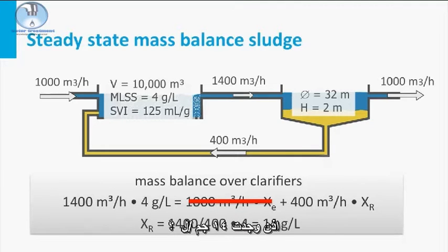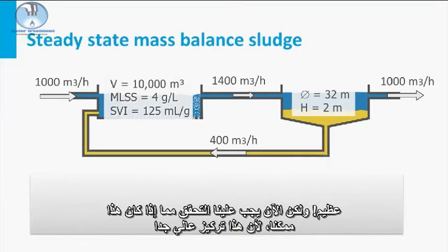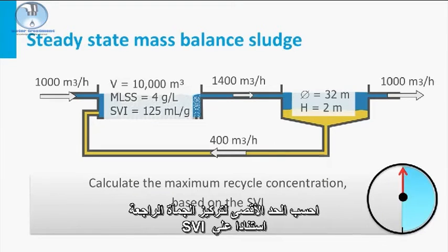So you've found 14 grams per liter, great! But now we must check if this is possible, since this concentration is pretty high. Calculate the maximum recycle concentration based on the sludge volume index.